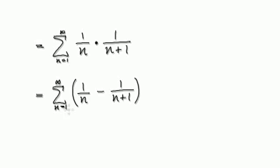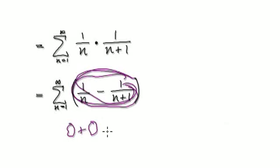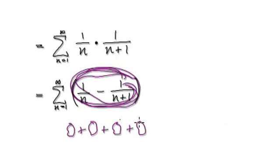So we are summing from the first term all the way to infinity. When n equals 1, this whole part here is this thing here. When n equals 2, this whole thing here would be this. When n equals 3, it would be this. When n equals 4, this whole thing here would be this. When n equals 5, this whole thing here would be this.